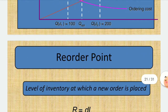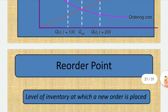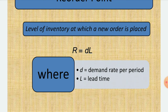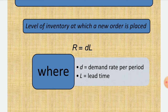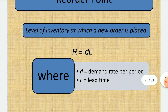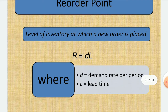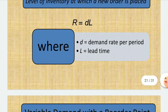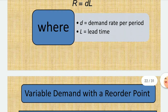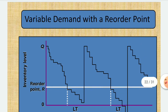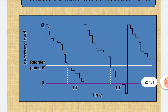The reorder point is the level of inventory at which a new order is placed. R = D × L, where D is the demand rate per period and L is the lead time.